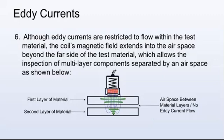Although eddy currents are restricted to flow within the test material, the coil's magnetic field extends into the airspace beyond the far side of the test material, which allows the inspection of multi-layer components separated by an airspace as shown below.